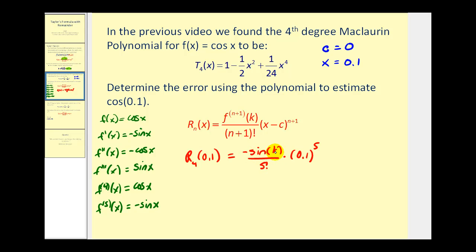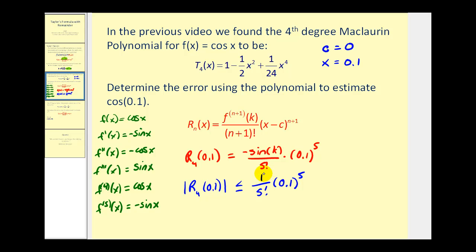We do know that the sine function always returns a value between negative one and positive one, where negative one is the minimum and positive one is the maximum. So instead of using the formula in exact form, if we take the absolute value of the error, it must always be less than or equal to the maximum value of negative sine x, which is positive one. So we use one divided by five factorial times 0.1 to the fifth power.